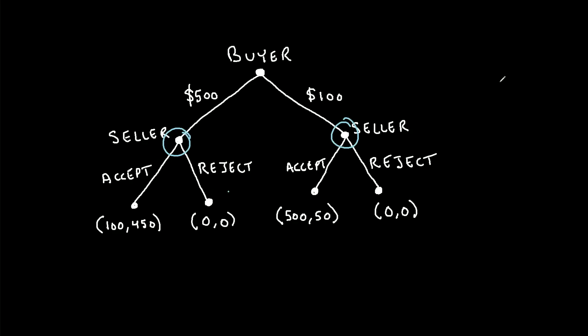And what backward induction says is, determine what the outcome will be at all of the end nodes, and then once you've done that, work your way up the game tree and keep determining what outcome will happen.